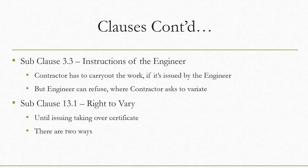This authority has been given to the engineer under sub-clause 3.3, Instructions of the Engineer. Under that, the contractor cannot reject any instruction given by the engineer without reasonable ground. The same applies for variations — if the engineer has instructed a variation and there is no reasonable ground to refuse, the contractor has to obey. Reasonable ground would be something like a specified material not being available in the market, or requiring three to four months to import, making it impractical to complete the project on time.